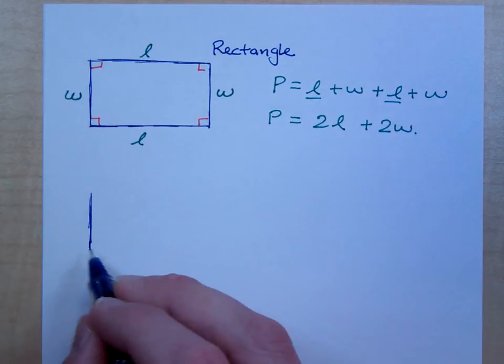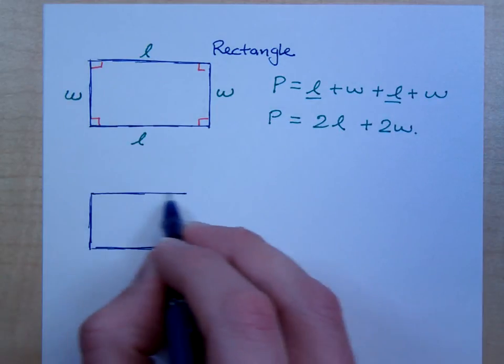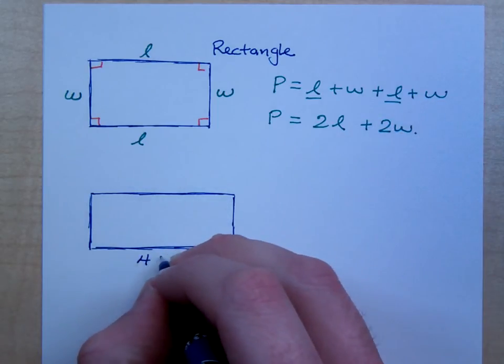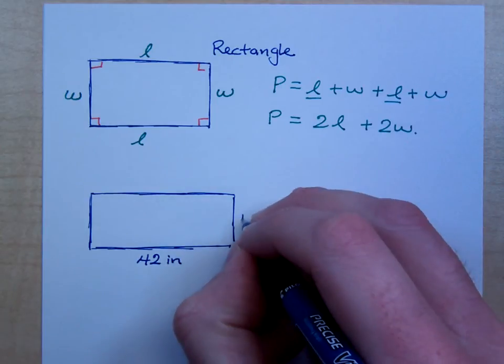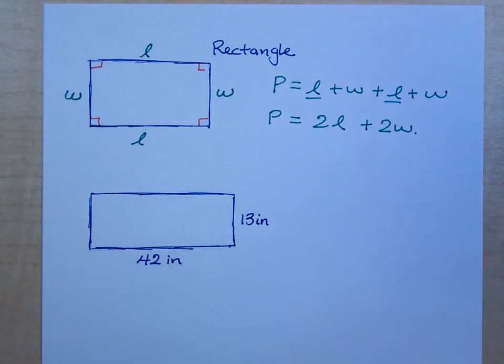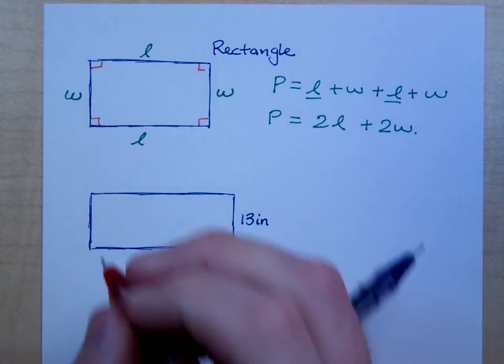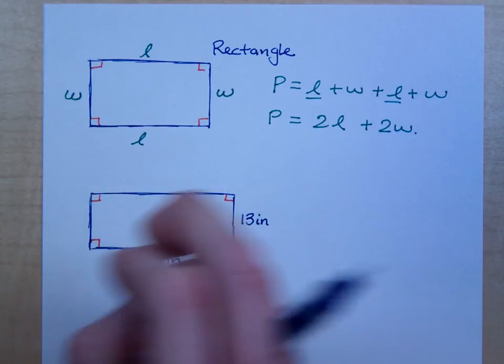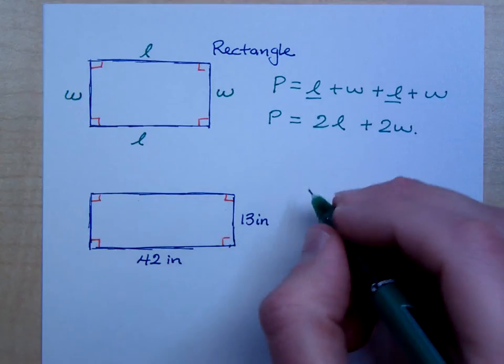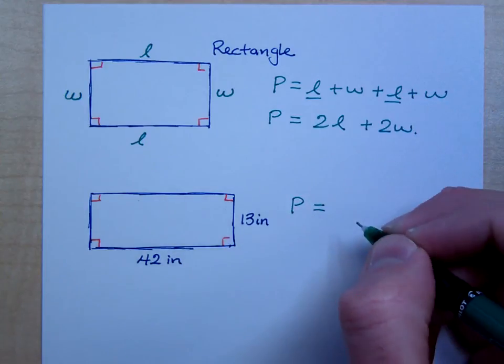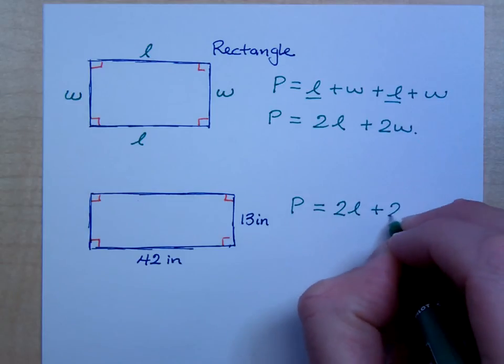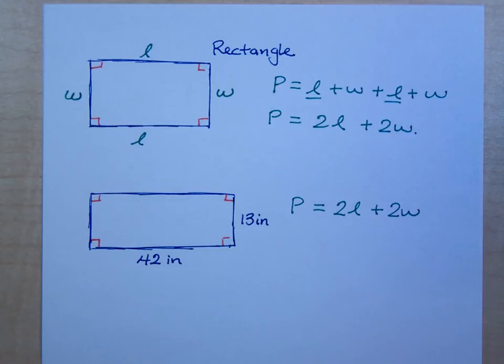So, what if I give you a rectangle? And I say here that this guy is 42 inches and this is 13 inches. So, I'm giving you that this is a rectangle. A lot of times you'll see it designated with the right angles in the corners. How can I find the perimeter? What's the formula for a perimeter for a rectangle? Twice the length plus twice the width. Do you all agree with that? Yes. So, do you know the perimeter?